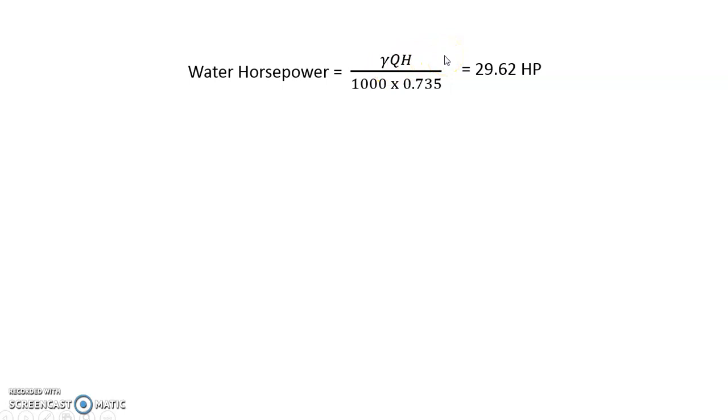Now horsepower of motor required or the brake horsepower is water horsepower divided by two efficiencies. In previous case we just had taken efficiency of a motor, but efficiency of pump is also given, so the modified formula is water horsepower divided by efficiency of motor as well as efficiency of the pump.